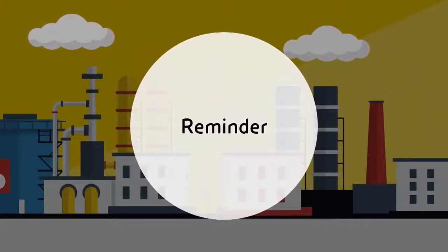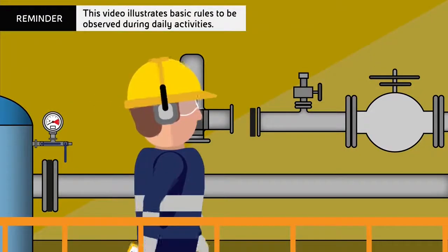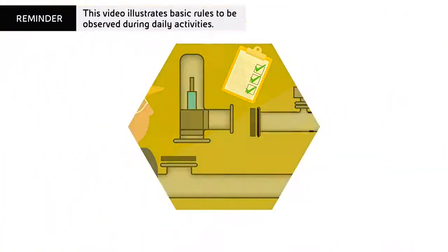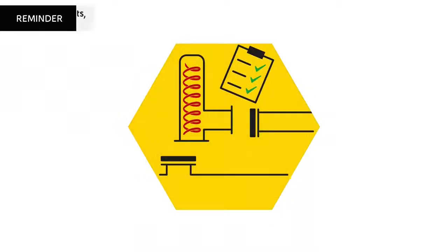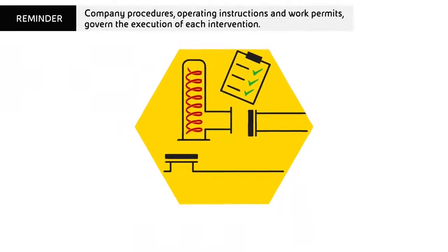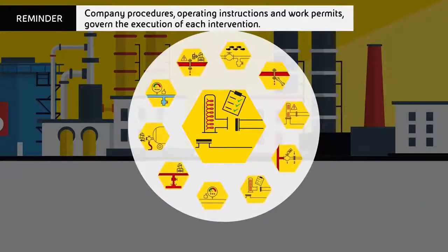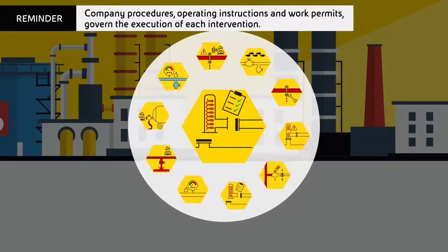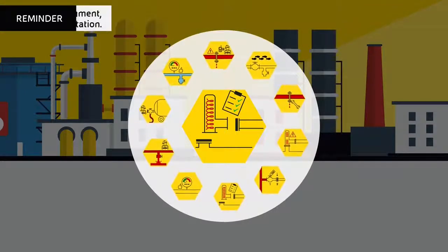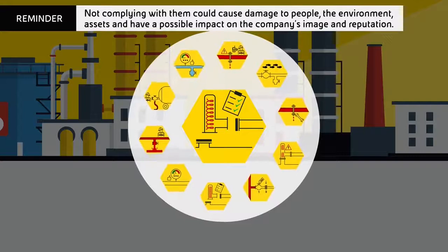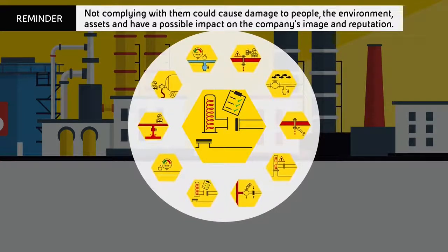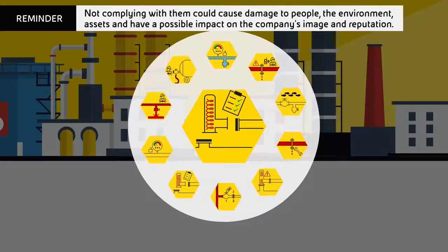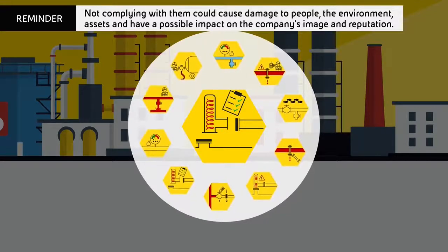Reminder. This video illustrates basic rules to be observed during daily activities. Company procedures, operating instructions and work permits govern the execution of each intervention. Not complying with them could cause damage to people, the environment, assets, and have a possible impact on the company's image and reputation.